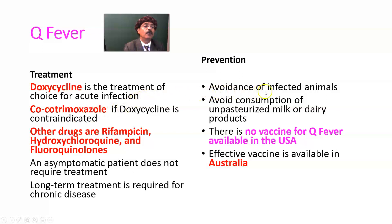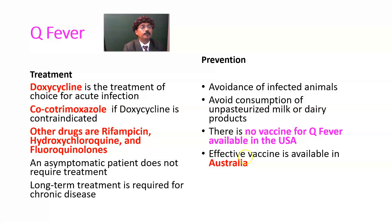Prevention is key. Avoid contact with infected animals if possible, and avoid consumption of unpasteurized milk or dairy products. Stay away from the excreta or birth fluid of animals that are potential reservoirs or infected with Q-fever. There is no vaccine available for Q-fever in the United States, but an effective vaccine is available in Australia.